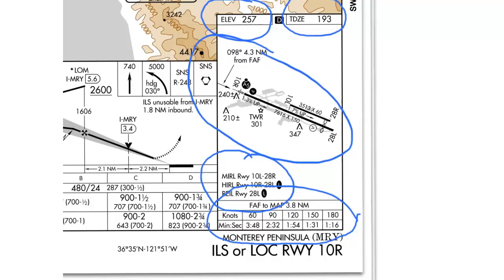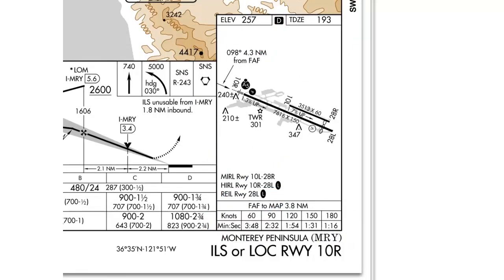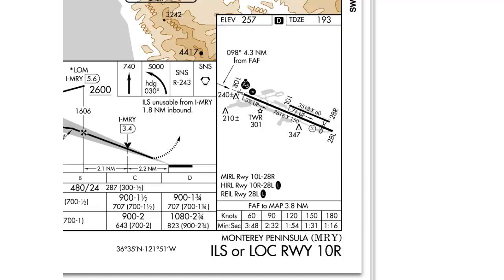Now let's talk about some specifics. When we look at the elevation and touchdown zone at the top, we notice that in between them is a D. This D is referred to as negative symbology, since it's a white letter on a black background. Finding the D in this location indicates that when looking at the airport facility directory, there may be some more detailed information regarding the runway dimensions than is listed on the chart. So let's get into the meat of this — the airport sketch.